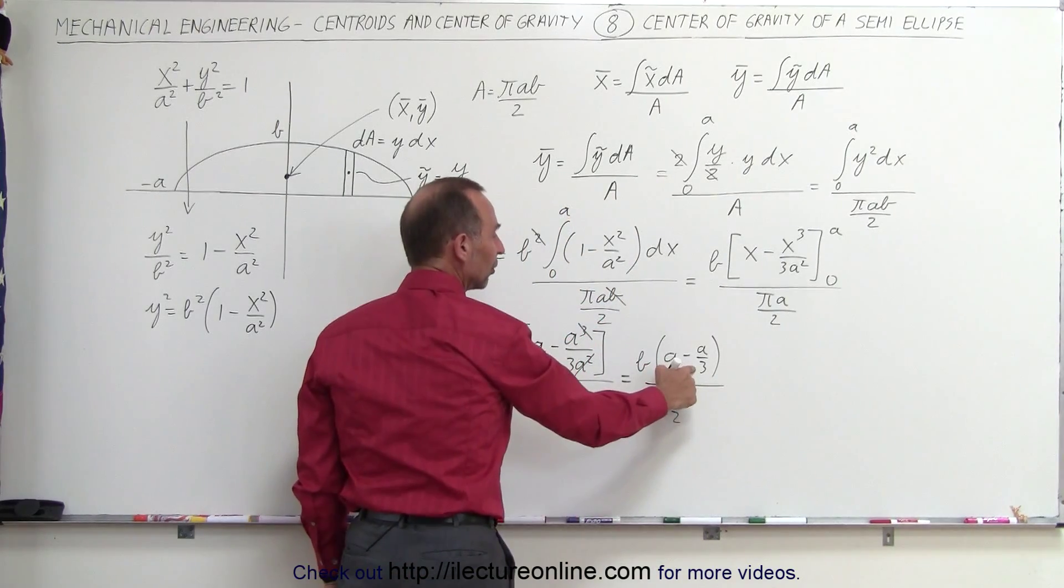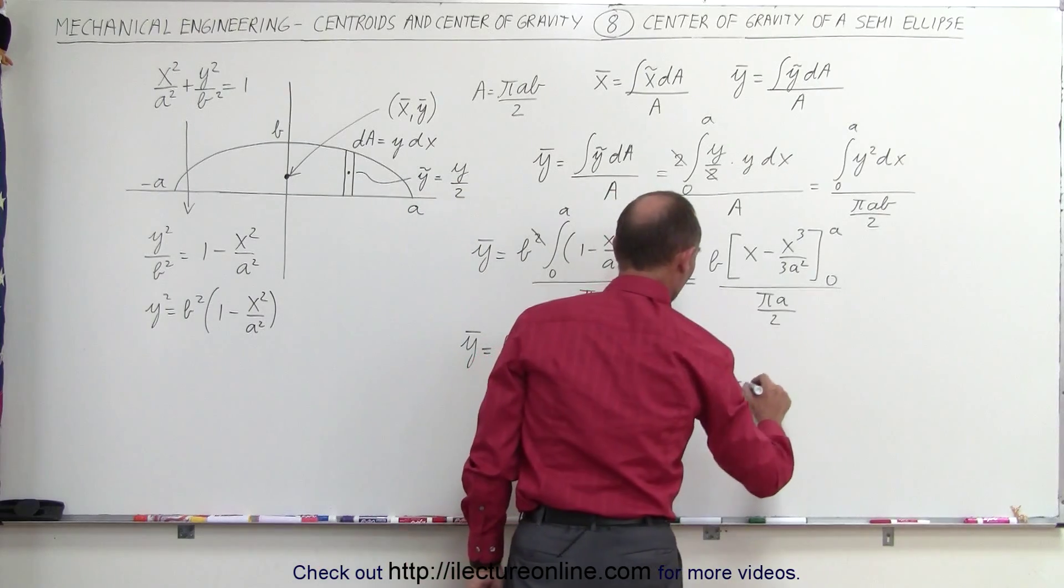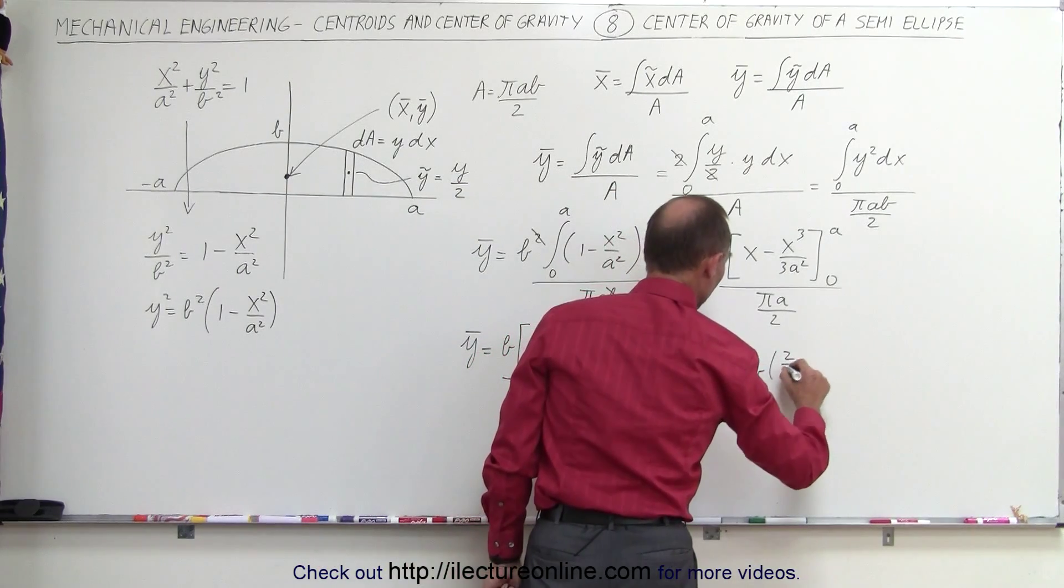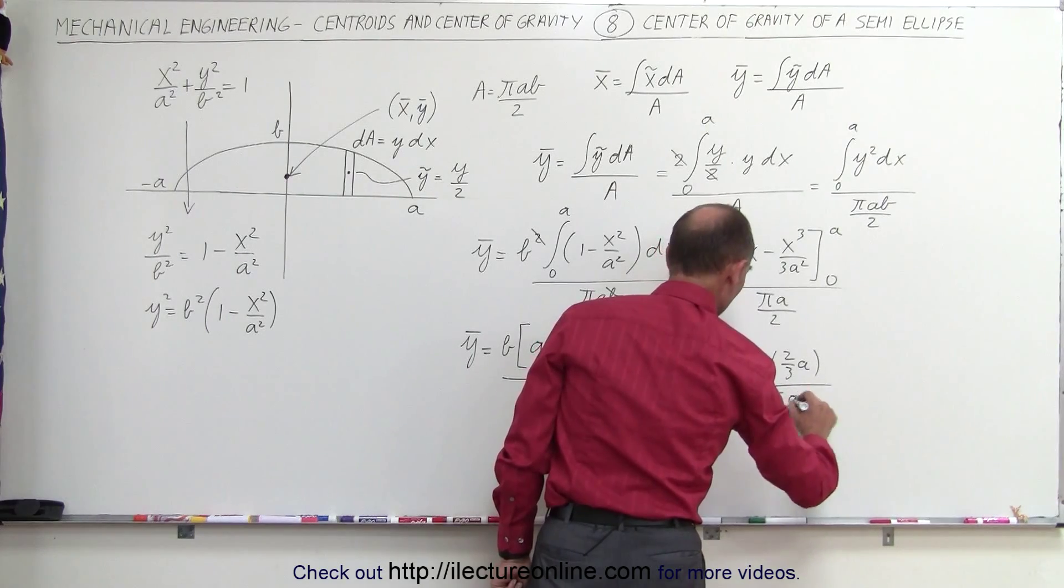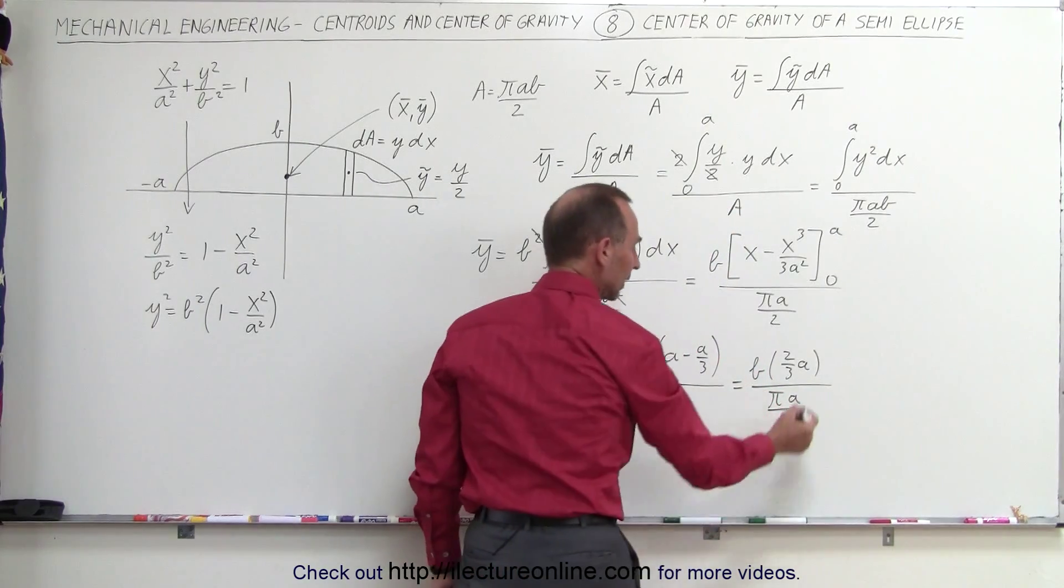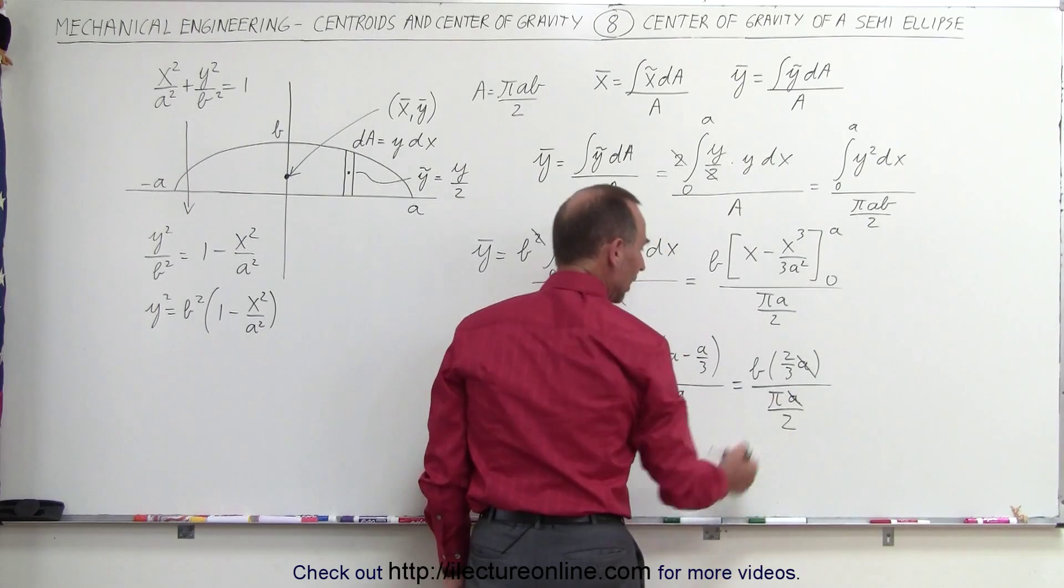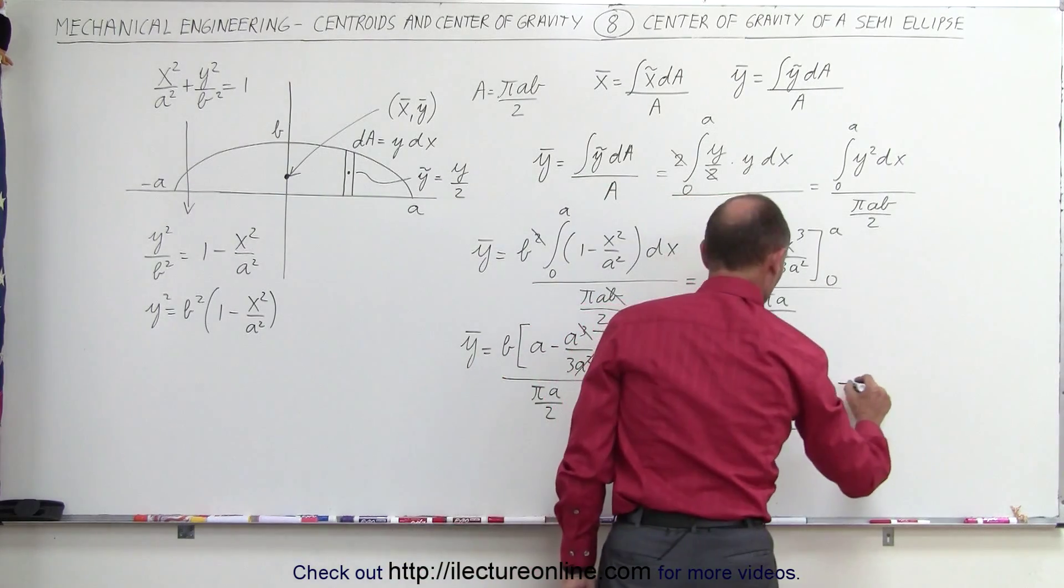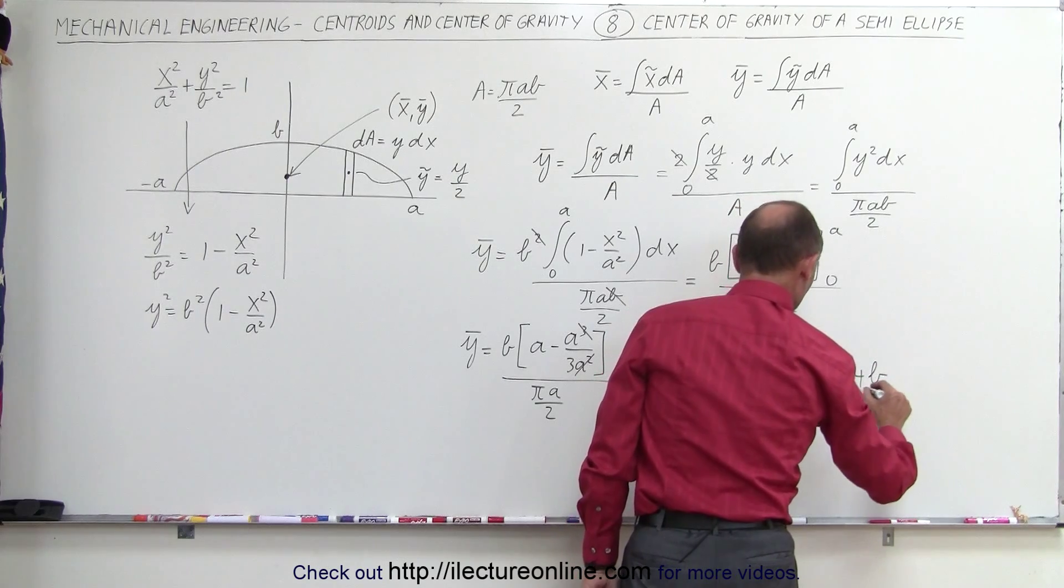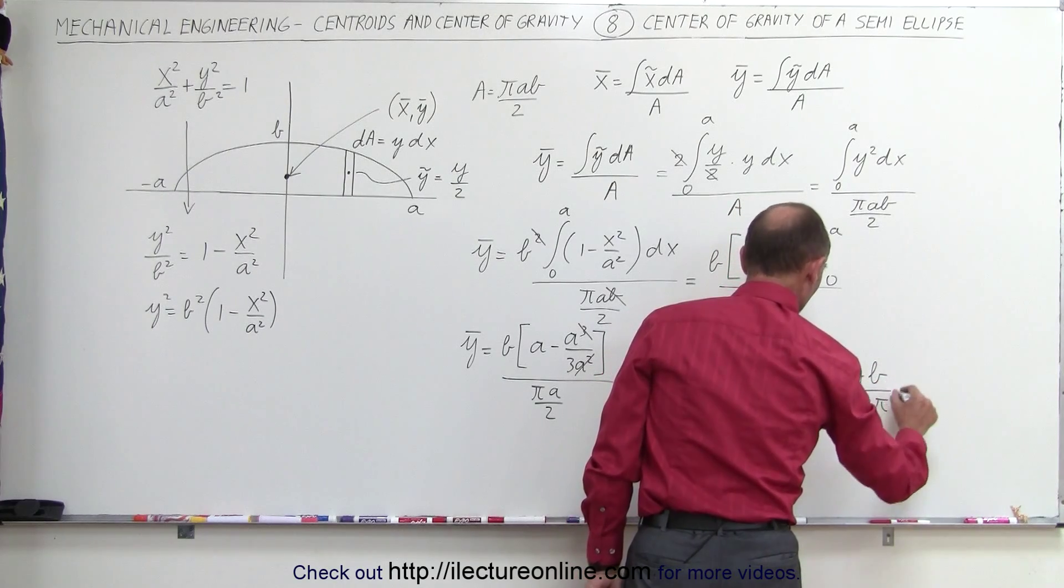And of course, 1A minus a third of an A, that gives us two-thirds of an A. So b times two-thirds of an A, divided by πA over 2. Then I can cancel out this A with this A, and the 2 will go to the numerator, the 3 to the denominator. That gives us 4b divided by 3 times π.